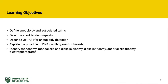By the end of this presentation, learners should be able to define aneuploidy and associated terms, describe short tandem repeats, describe quantitative fluorescence polymerase chain reaction for aneuploidy detection, briefly explain the principle of DNA capillary electrophoresis, and identify normal and aneuploidy electropherogram patterns.